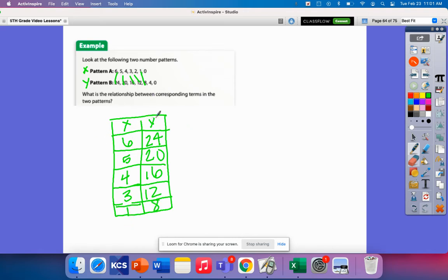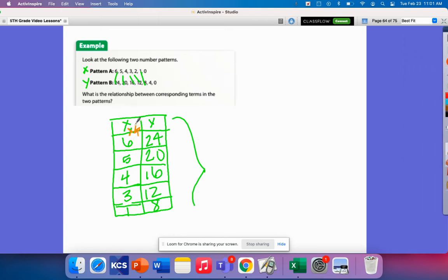So what pattern do you see here with these X and these Y values? So I've got 6 and 24, 5 and 20, 4 and 16, 3 and 12. So this would be... What do I do to 6 to get to 24? 6 times 4. Let me do that in different colors so it might show up. 6 times 4 would be 24. 5 times 4 is 20. 4 times 4 is 16. And 3 times 4 is 12.